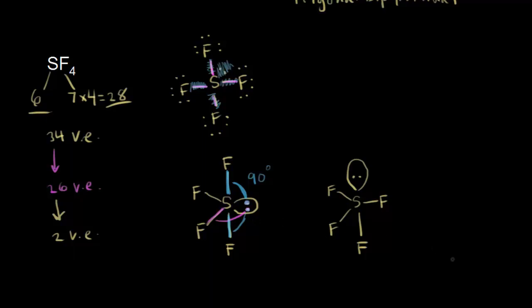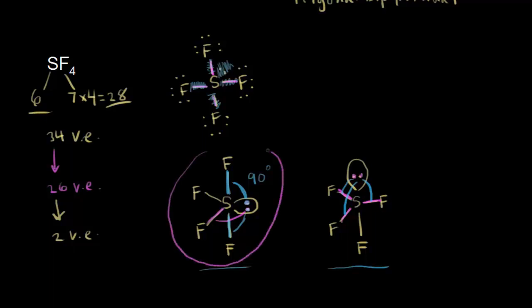Comparing with the right structure — lone pair axial — that lone pair is 90 degrees from all three equatorial fluorines, giving 3 repulsive interactions at 90 degrees. The goal is to minimize electron pair repulsion, so VSEPR theory predicts that the lone pair goes in the equatorial position — the left structure wins. Non-bonding electrons are placed in equatorial positions in trigonal bipyramids to minimize electron pair repulsion.